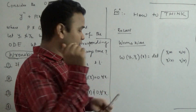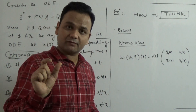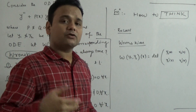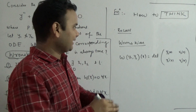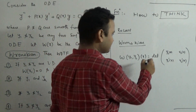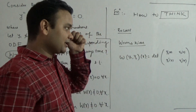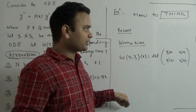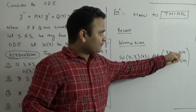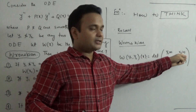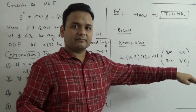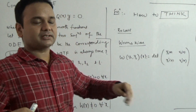You should read whatever books are available to you and get a feel for the Wronskian. The definition I gave is for two functions; similarly, you can extend it to three functions with the 3×3 determinant involving y1, y2, y3, their first derivatives, and their second derivatives.